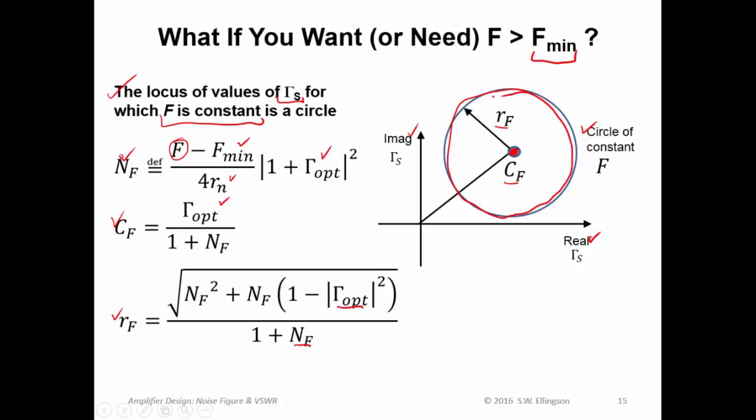And then you see, of course, that the radius of the circle goes to zero as the noise figure of interest approaches the minimum noise figure.